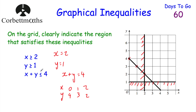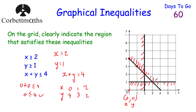For x + y ≤ 4, I'm going to choose a point not on that line — the origin (0, 0). Substituting into the inequality: 0 + 0 ≤ 4, which is 0 ≤ 4 — yes. So the origin satisfies the inequality, meaning the region below that diagonal line is accepted and the region above it is rejected. So here's our region. The question says clearly indicate the region — you can label it R, shade it in depending on what the question asks.